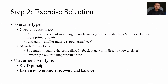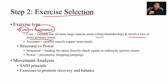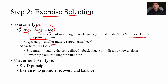Step two is exercise selection — now it becomes more specific to that person. Do we want to focus on core exercises or assistance exercises? Generally you want to start with core exercises that recruit more than one muscle area. For example, if you're thinking chest, the bench press involves two or more primary joints — you're working through the shoulder and through the elbow — targeting at least two joints. Versus assistance exercises, where you're working a smaller muscle group, like a biceps curl.